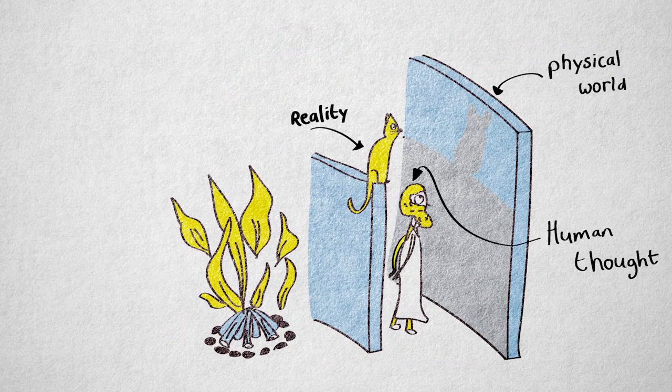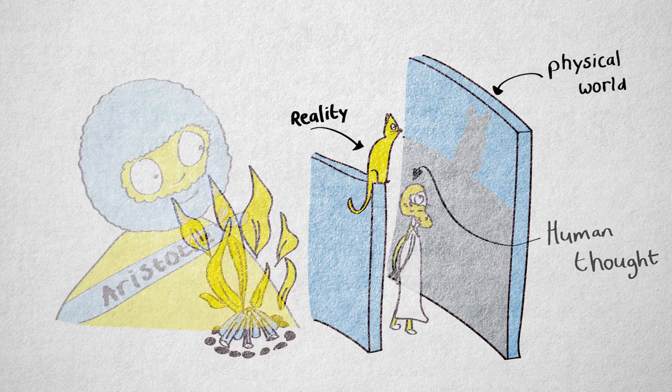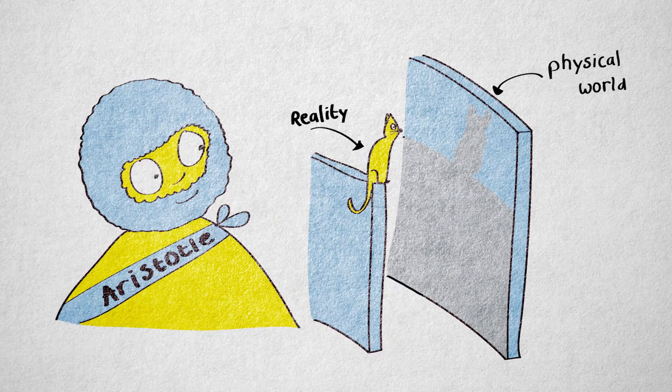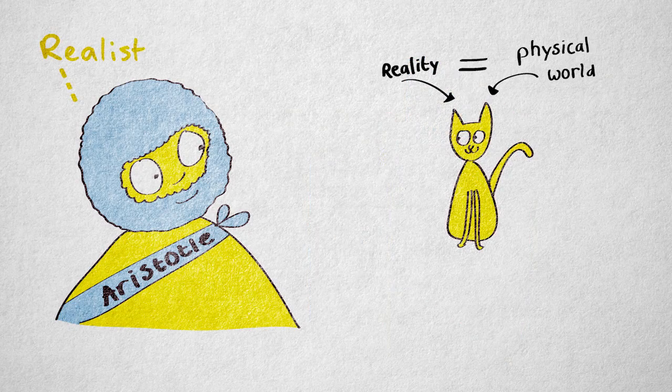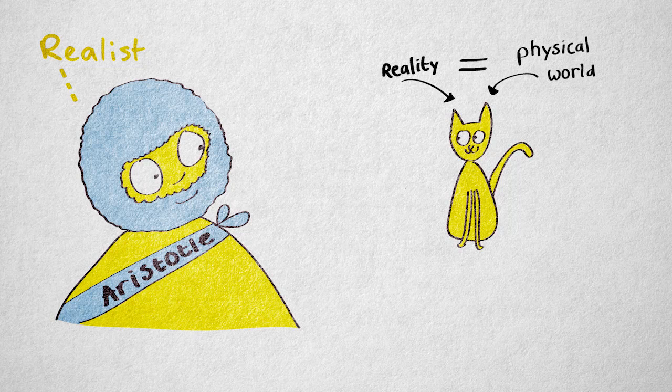Plato's student Aristotle was a realist, just like Plato. He thought that reality exists independently of human thought. But to Aristotle, reality is the physical world. There is no separate plane of existence where abstract forms live.